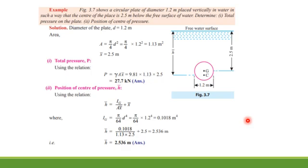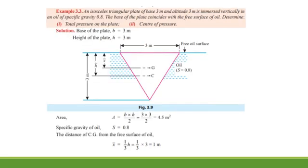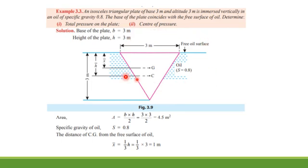Now let's solve another example with a different shape — a triangular one. The question: an isosceles triangular plate of base 3 meters and altitude 3 meters is immersed vertically in oil of specific gravity 0.8. The base of the plate coincides with the free surface of the oil. Determine the total pressure on the plate and the center of pressure. This question differs from the previous one in shape and fluid — oil is used instead of water.